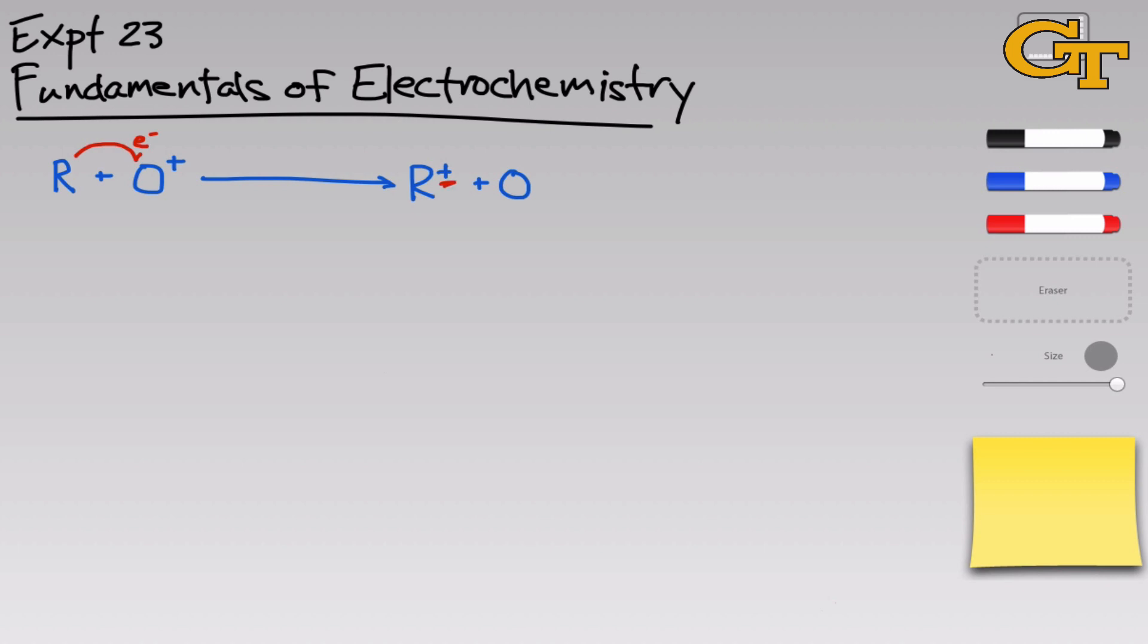Because R is the reagent that's donating an electron to O+, one name that you'll hear for R is the reducing agent or reductant. It's doing the reducing. O is the species being reduced, but the thing that is doing that is the reagent R, so it's called the reductant. Another way to think about it from the perspective of O+ is O+ is a species that's receiving or pulling electrons from R. In that sense, O+ is what we call an oxidant or an oxidizing agent. It's inducing the oxidation of R. You'll see these terms come up in redox reactions.